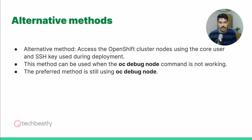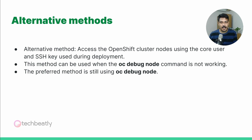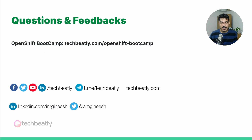While OC DebugNode is the recommended method, there are alternative ways to access OpenShift cluster nodes. One approach is to use the core user and SSH key that you used during the deployment. This can come in handy if the OC DebugNode command is not working for some reason. Just remember, the preferred method is still OC DebugNode. When SSH access is restricted or unavailable, the OC DebugNode command is your go-to solution.